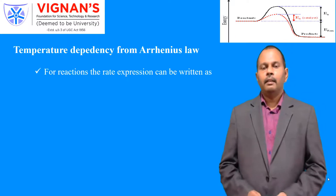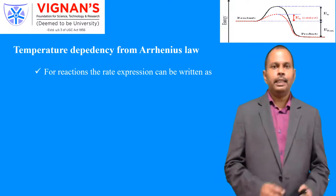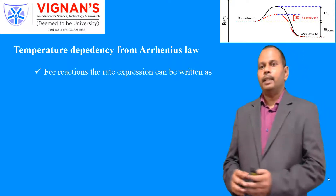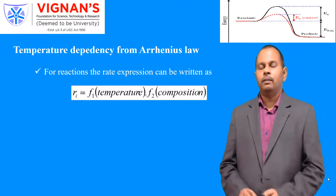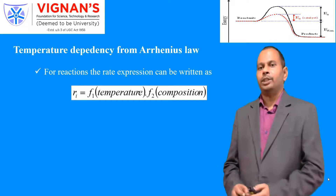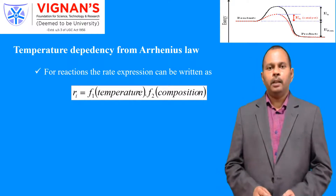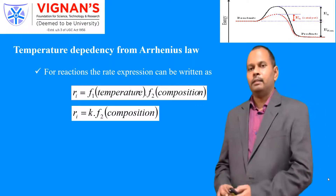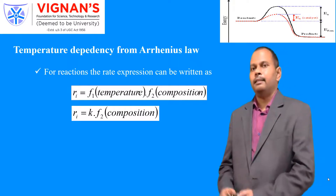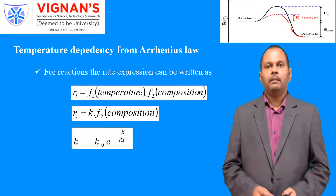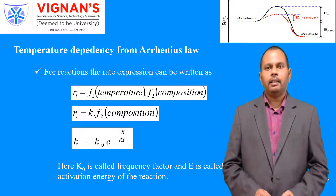Temperature dependency from Arrhenius law: for many reactions, particularly elementary reactions, the rate expression is a function of two terms — the temperature dependent term and the composition of the reactive molecules, i.e., concentration. This can be written as Ri = F1(T) × F2(composition). The function of temperature can be represented with the rate constant K, so this equation becomes Ri = K × f(composition). The rate constant always follows the Arrhenius equation: K = K₀ × e^(−E/RT), where K₀ is the frequency factor and E is the activation energy.